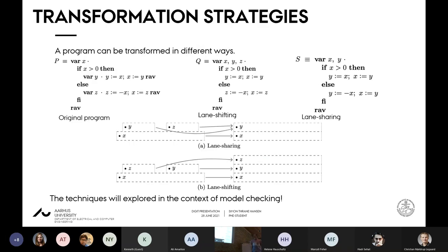Whenever we are transforming a program, we can basically do it in two different ways. There are two different kinds of transformation strategy. One is called lane sharing, where we basically try to reuse global variables as much as we can. It's not always possible to do this technique. You can see this is using the lane sharing technique, but we also have the lane shifting technique, where we just for each local variable, create a global variable. You can always do that. We plan to explore these techniques more in the future in the context of model checking.